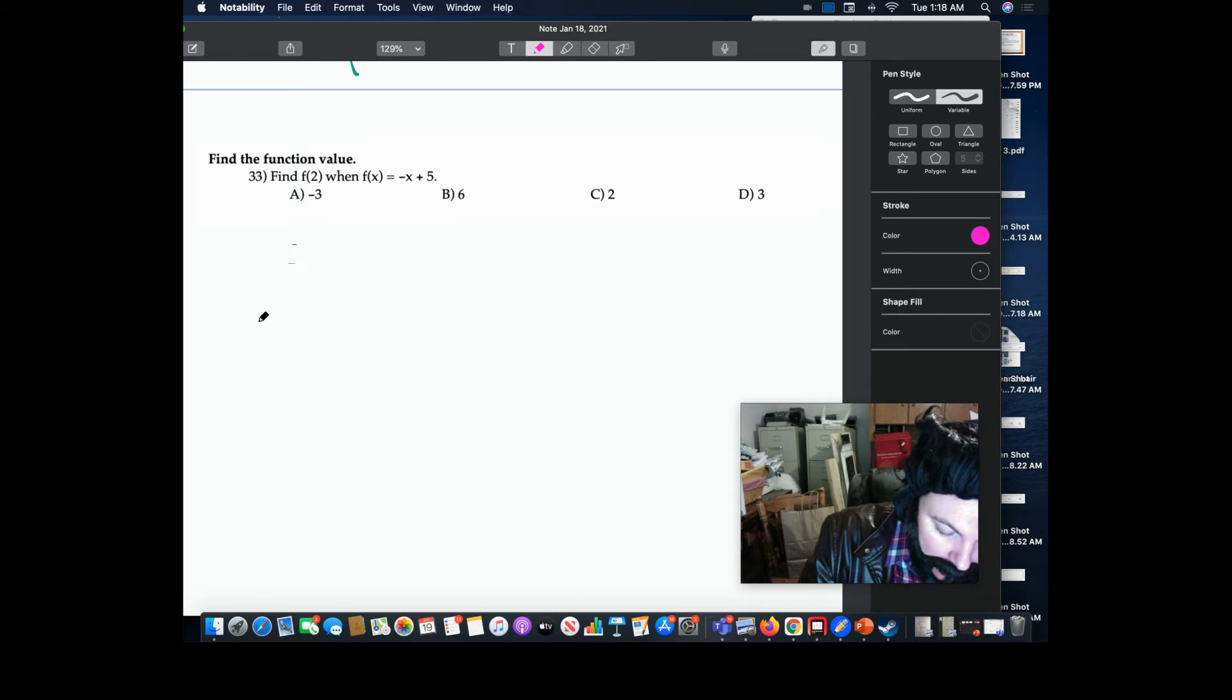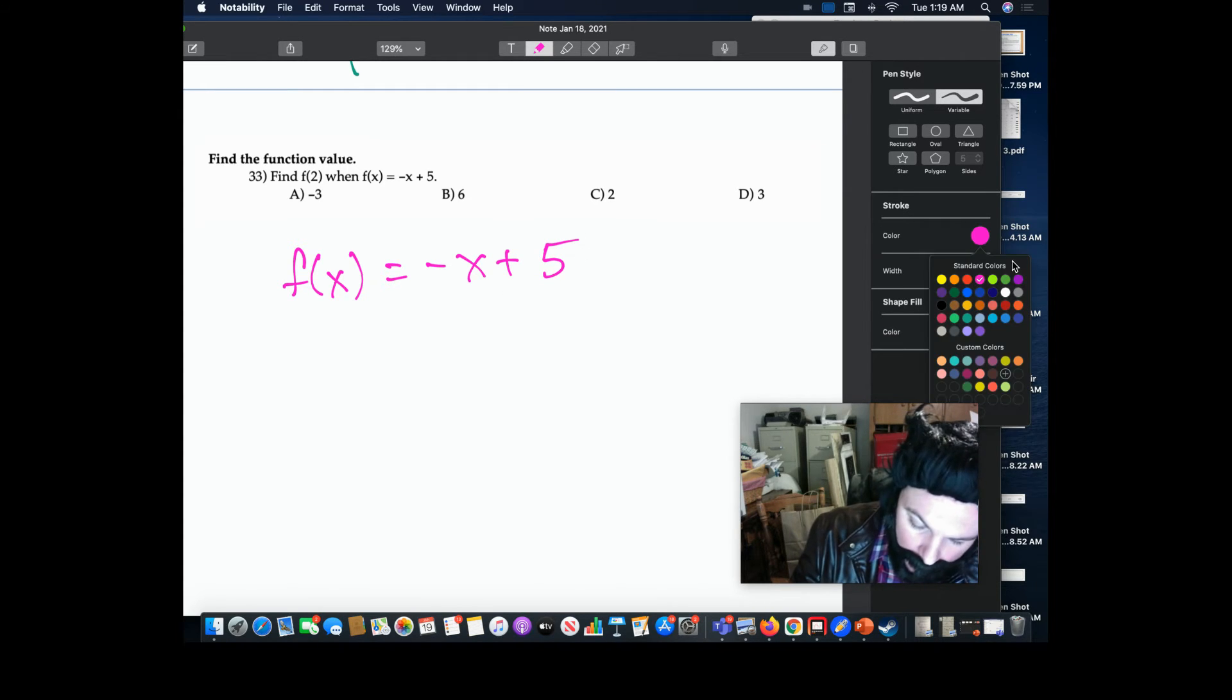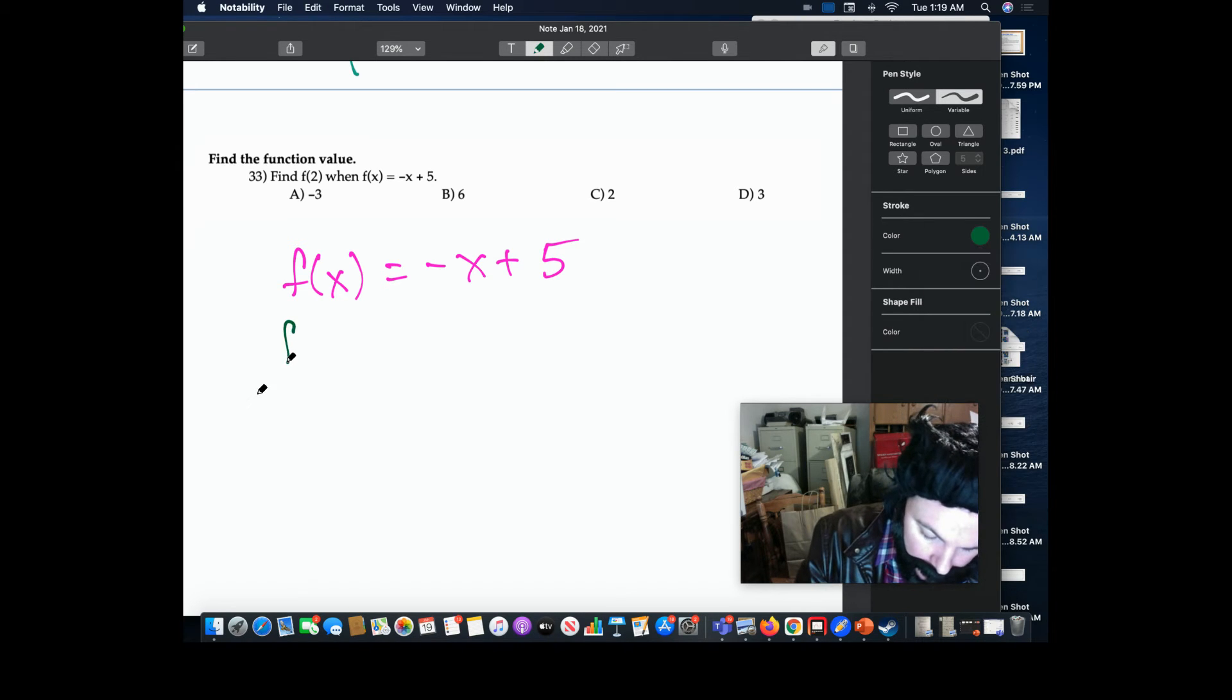So the recommendation here is to write f of x equals negative x plus 5, and then we rewrite the same function.